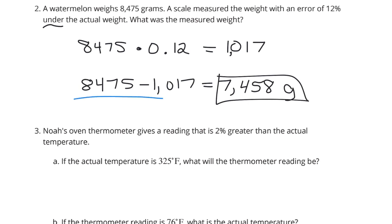Another way to solve this question is to say, all right, 8,475 grams. I was 12% under. And so 100 minus 12 is 88%. And so if I multiply this number 8,475 by that 88% in decimal form, I will also get 7,458 grams. And that's the beauty of math. There's many times more than one way to solve the question correctly.